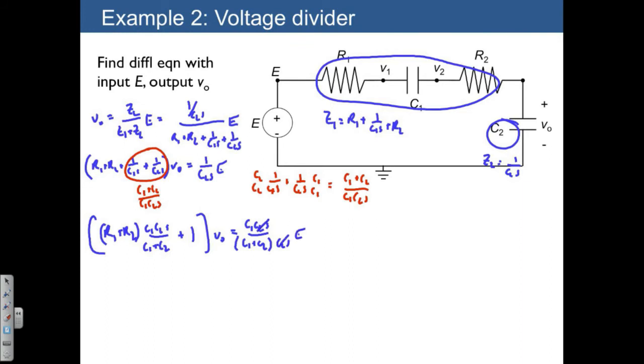You'll see the reason why I did this in a moment, but we're now in a position to write this as a differential equation. We have R1 plus R2 times C1C2 divided by C1 plus C2 plus 1, actually since we're writing as a differential equation,